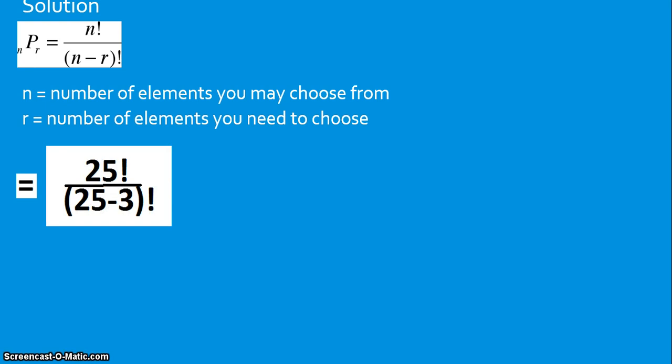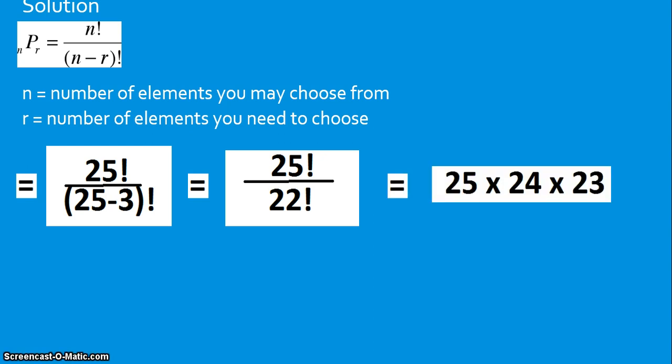And so n being the number of elements you may choose from, we can choose from 25 possible students. So 25 goes on top, 25 factorial, divided by 25 minus 3. 25 being the number of elements you may choose from, 25 students, minus the number of elements, or students in this case, you have to choose, 3. 25 minus 3 is 22. Which simplifies to 25 times 24 times 23. And just a reminder, if you're wondering what the exclamation point is, it's the factorial symbol. Which means just take the number and multiply by all the numbers that come before it. So 25 factorial will be 25 times all the numbers up to the number 1 that come before it. So 25 times 24 times 23 times 22, all the way up to the number 1. And so you do that and you simplify.